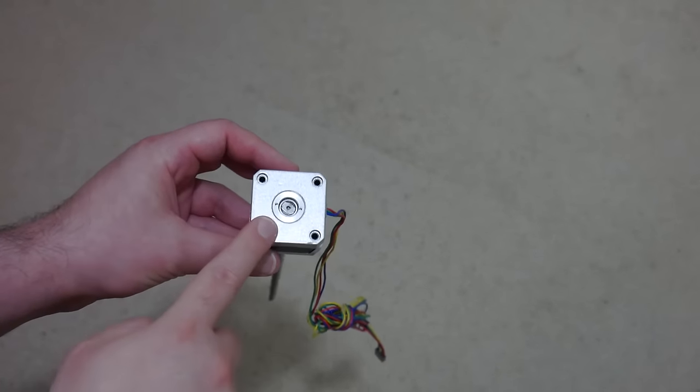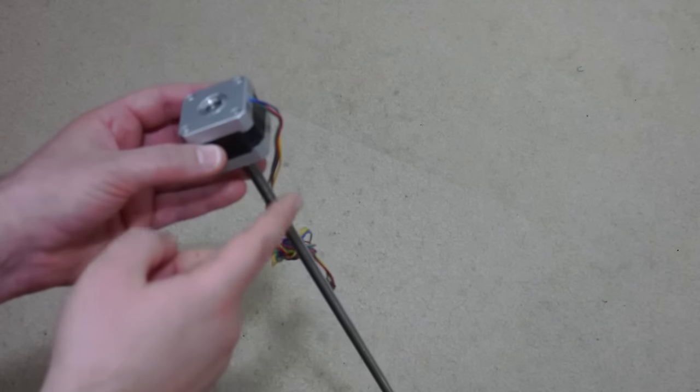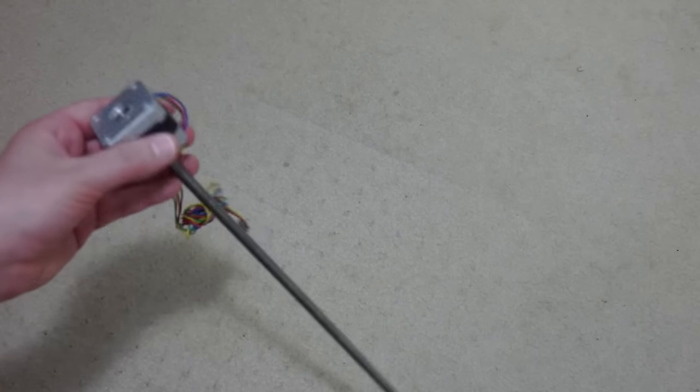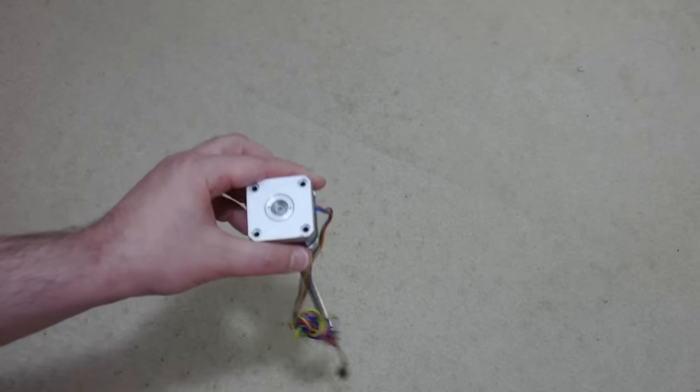Now that the screws have been removed from the motor, we just need to give this a good whack to separate the top half from the bottom half. And I've found the best way to do that is to just knock it on something soft, like a carpet.